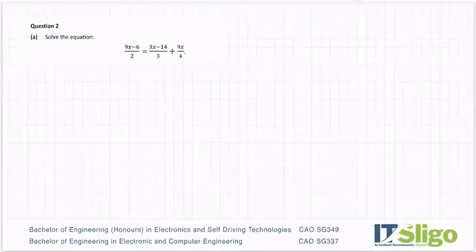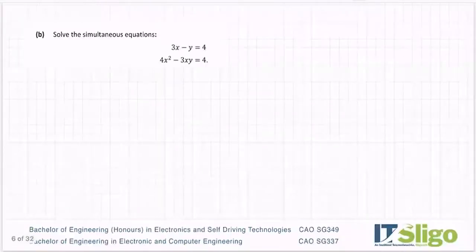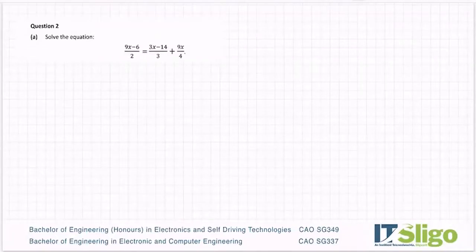Right, let's have a look at question two on this 2020 paper one. Solve the equation, so it's an algebra question. We have an algebraic question and we have a set of simultaneous equations. One of these parts, this one is normally worth 10 marks and the next one is normally worth 15. So solve the equation 9x minus 6 over 2 is equal to 3x minus 14 over 3 plus 9x over 4.